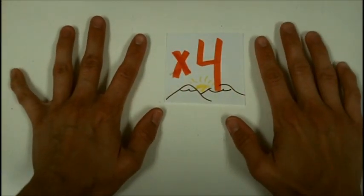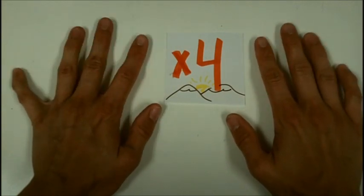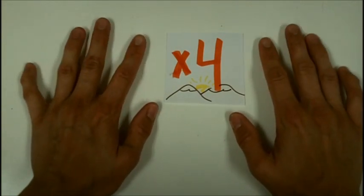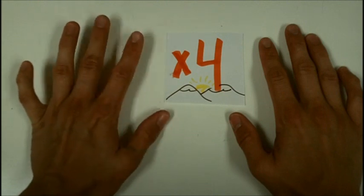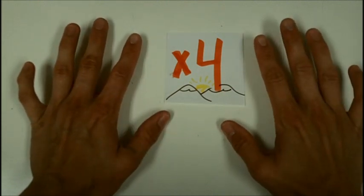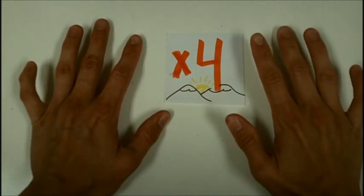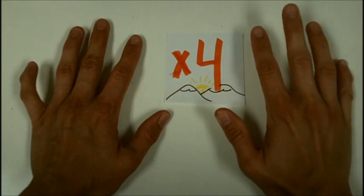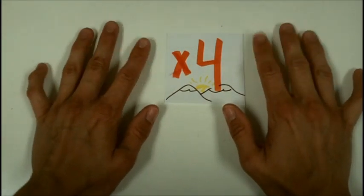Count by fours. Ready? Go. Oh, let's all count together. Count by fours. 4, 8, 12, 16, 20, 24, 28, and 32, 36, and last comes 40. Let's all count together. Count by fours.